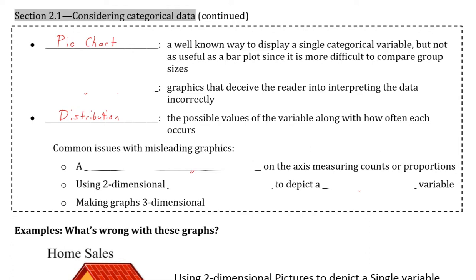Pie charts have an issue where they can be manipulated into what we call a misleading graphic, though they are not the only graphic that can be misleading. A misleading graphic is any graphic that deceives the reader into interpreting the data incorrectly. Some of the common issues we see that lead to misleading graphics include the following three issues.